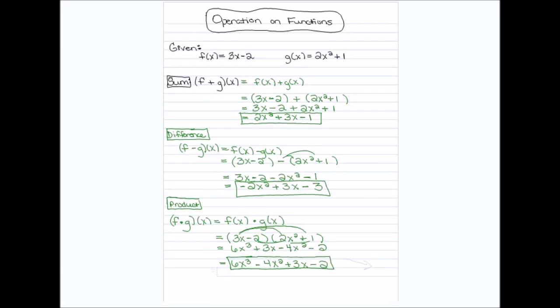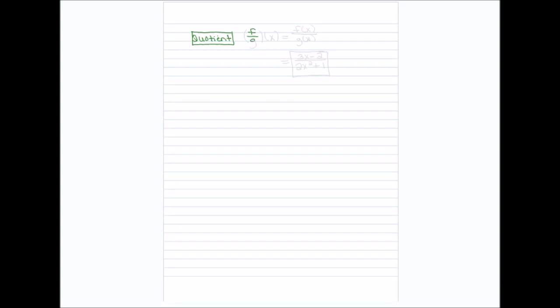Now let's talk about one more operation — I'm going to flip the page over. The last operation is quotient. Quotient is the same as division. So if I have f over g of x, that's the same as saying f of x over g of x. I put the f function at the top — 3x minus 2 — and the g function at the bottom — 2x squared plus 1. As I look to simplify this, there is nothing I can do, so this is my final answer.